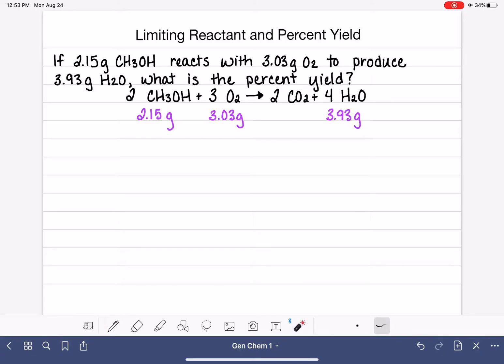It's not giving us any information at all about CO2, and that's pretty typical. In percent yield problems, we're usually given information about all of the reactants and only one of the products. So this is the product that the problem is focusing on. And it's asking us to calculate the percent yield for this reaction.